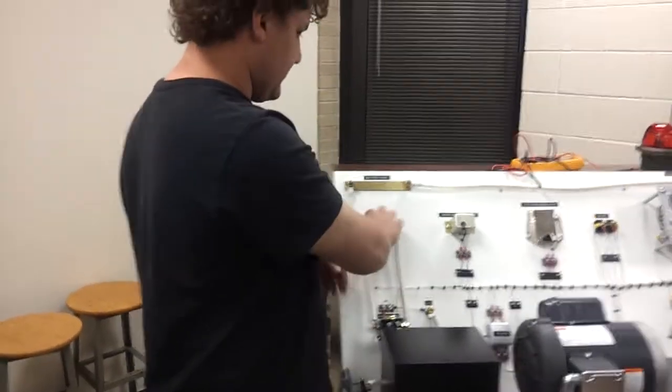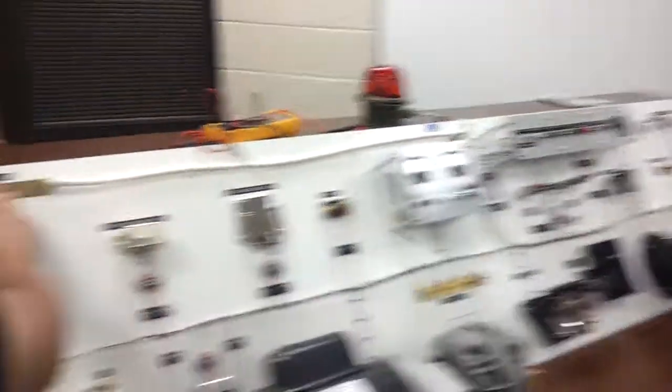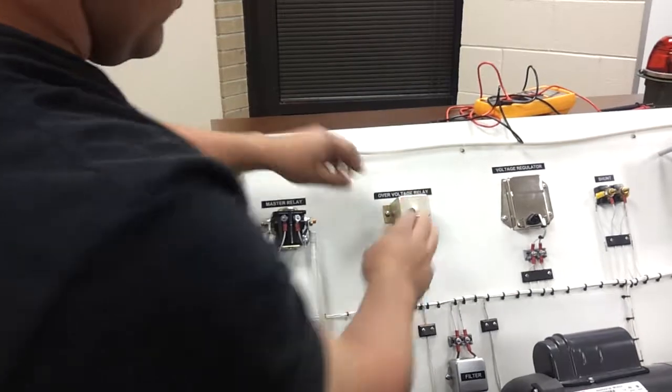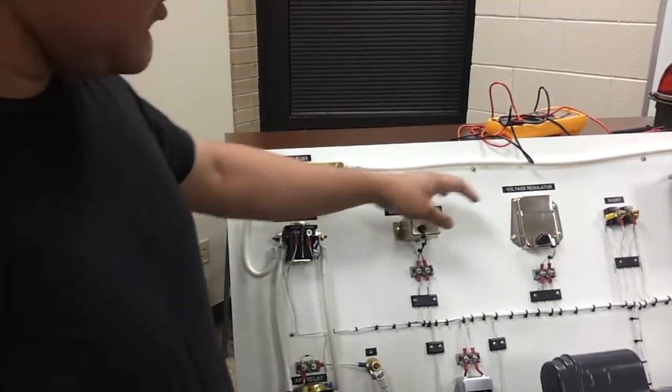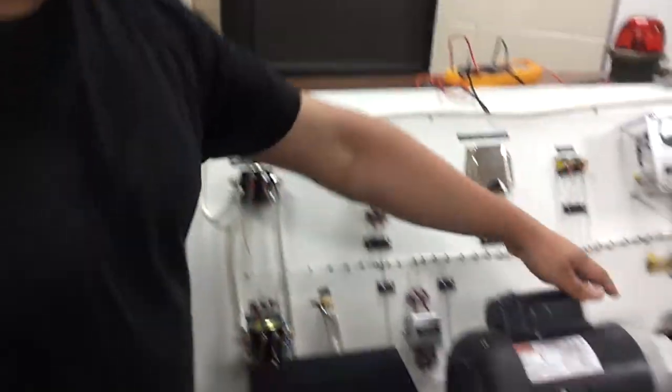Which goes to your mass relay, which activates all your buses. Either your powerless and your batteryless. Your overvoltage is to protect your components and your alternator from spikes.